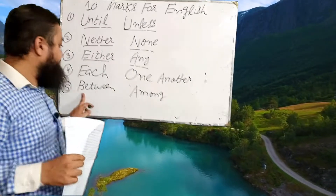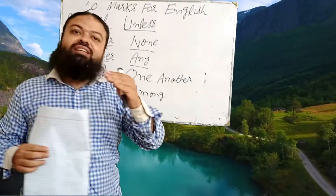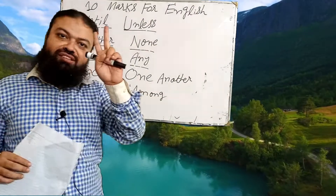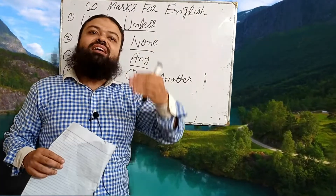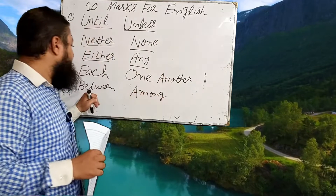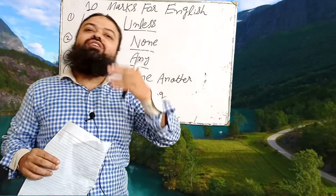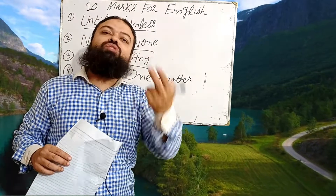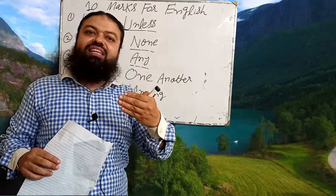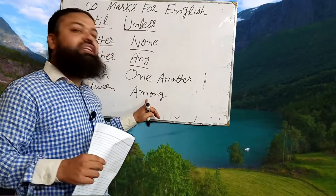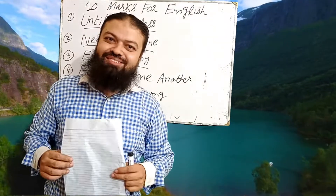The fifth one is 'between' and 'among.' 'Between' is used for two things and 'among' is used for more than two. For example, 'Ali is sitting between Rashid and Amjad' is correct — 'between' is used for two persons or two things. 'Among' is used for three or more. For example, 'distribute mangoes among three boys' is correct.